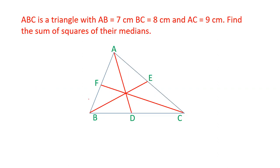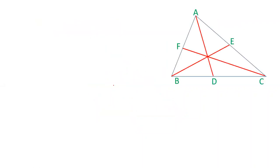The question is: there is a triangle ABC with sides 7, 8, and 9. We have to find out the sum of the squares of its medians AD, BE, and CF.